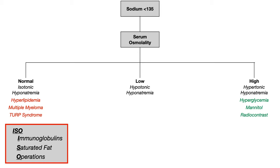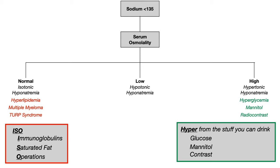That's why it's hypertonic hyponatremia. A way to remember this: you get hyper from stuff you can drink. You can drink glucose, you can drink mannitol — which is really just a sweetener — or you can drink contrast if you're getting a radiology study. So you get hyper from stuff you can drink.